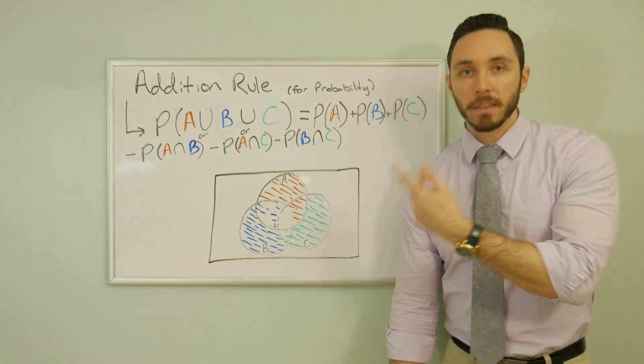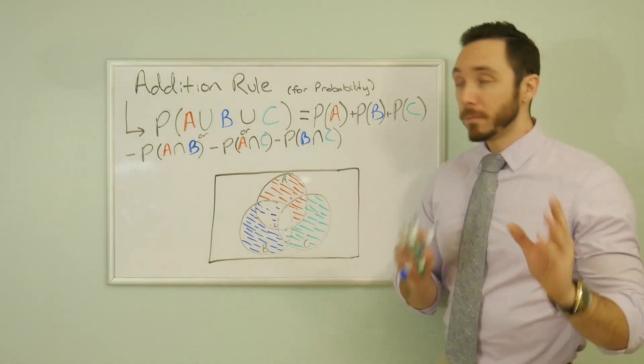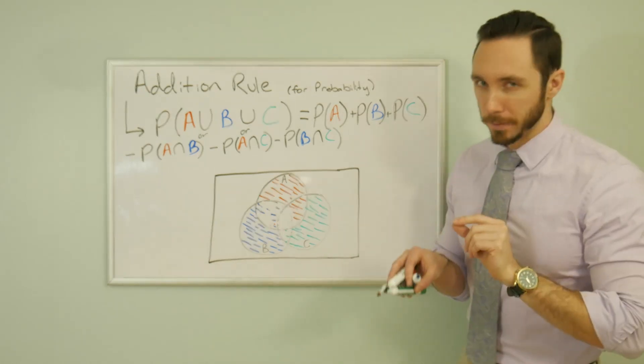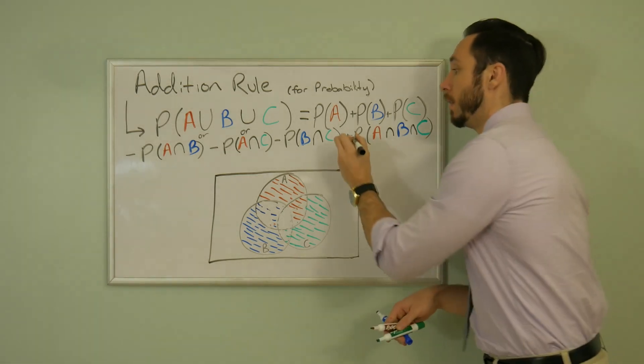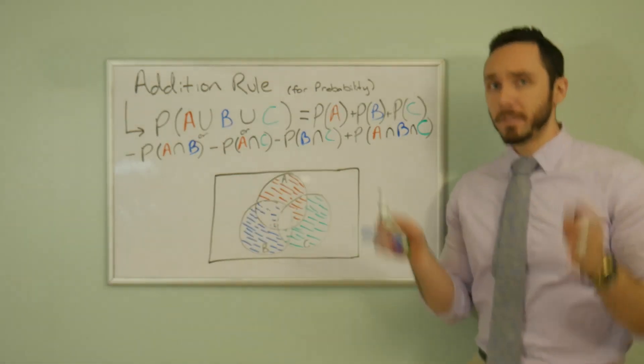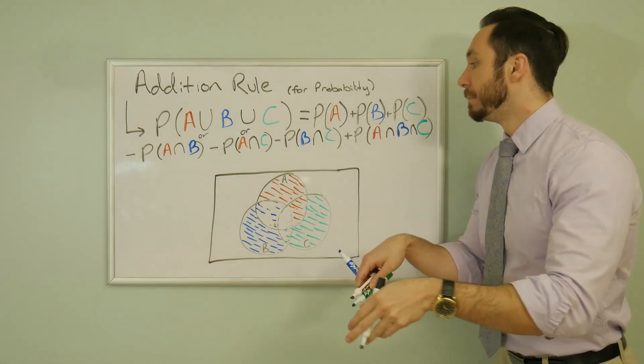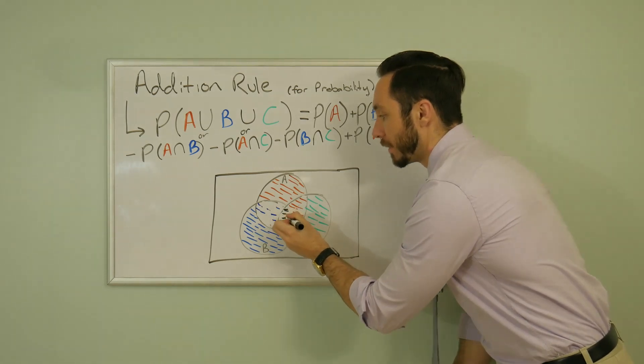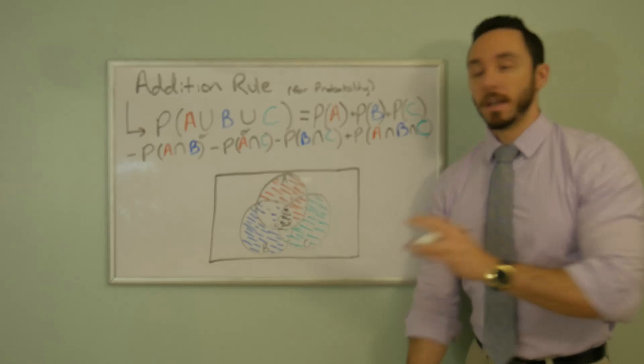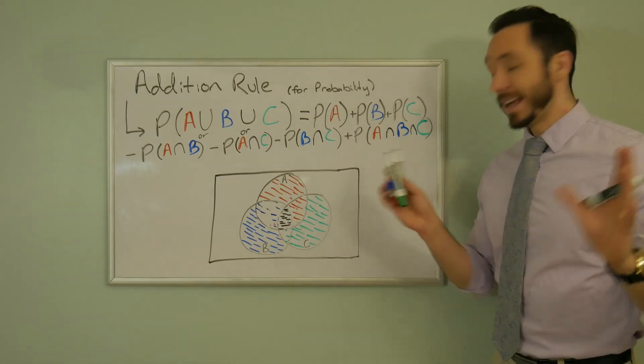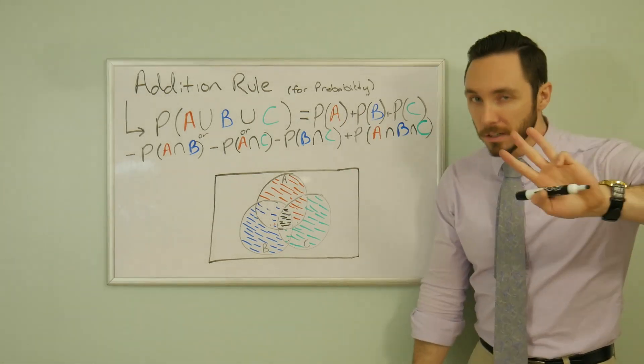So now to accommodate for the fact that we erased it too many times, we now have to add it back in. So instead of subtracting, we are now adding the final probability. Now with the addition of this last probability, all three, the probability of liking apples and bananas and cherries, I will now use black here for this inner piece. I will now shade in this inner piece. And now finally, phew, it's all shaded in once. We're good to go. This is the formula of the addition rule for three events.